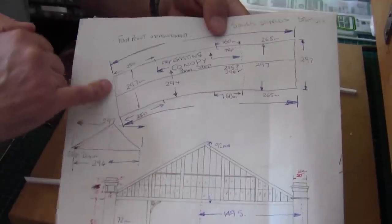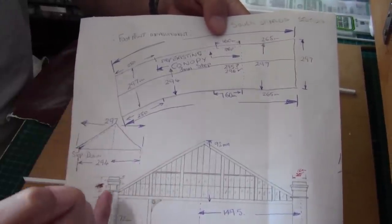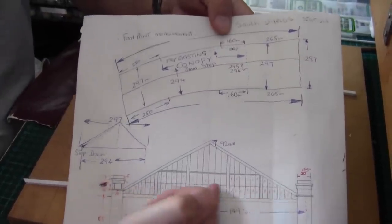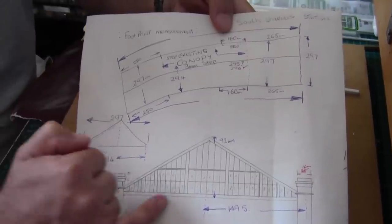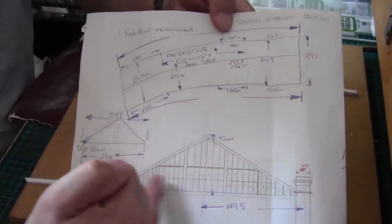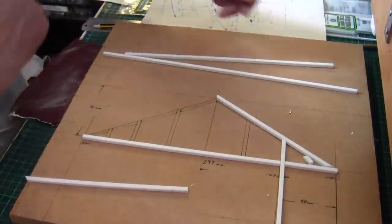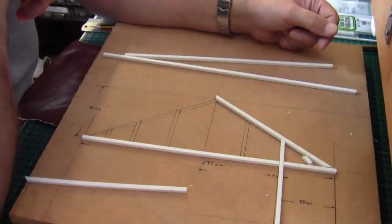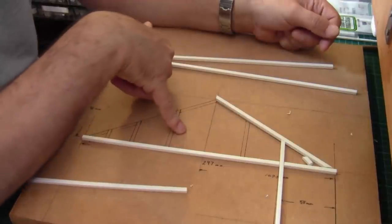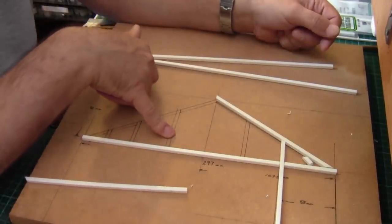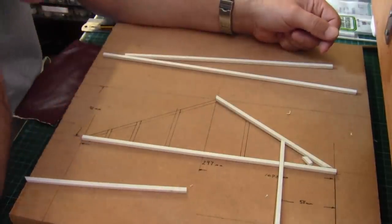So here we have a set distance of 297mm, which is across the whole width of the station, from behind the capping stones either side. And here we have a jig or a guide which I'm going to use for the fascias. And when I'm finished with the fascias, I'm going to use the same jig to do the spans on the oval roof.